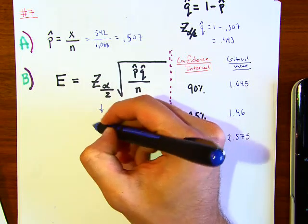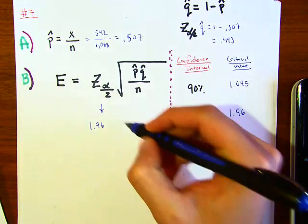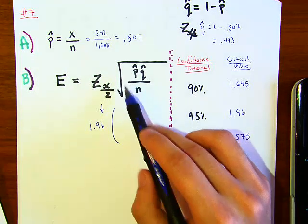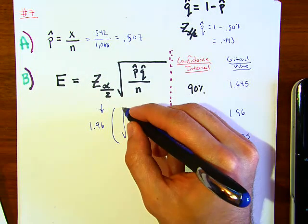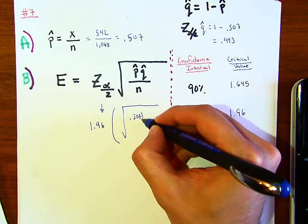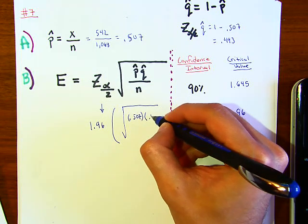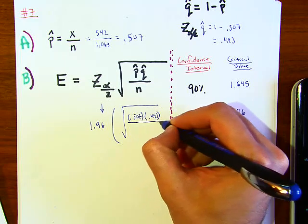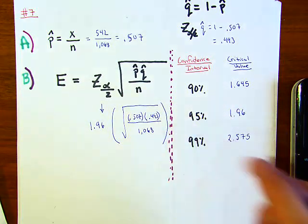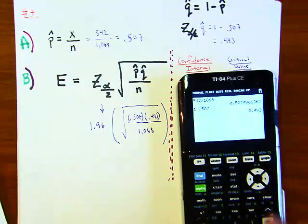Let's just substitute it in. This z alpha over 2 is 1.96, and notice that 1.96 is multiplying to whatever the square root of... our p-hat is 0.507 and our q-hat is 0.493, and we're going to divide that by our n value which is 1068.